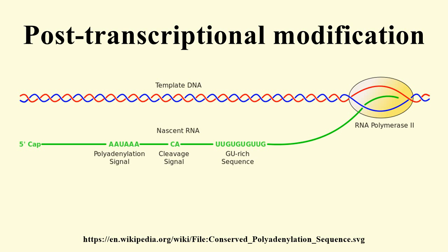Histone mRNA Processing: Histones H2A, H2B, H3, and H4 form the core of a nucleosome and thus are called core histones. Processing of core histones is done differently because typical histone mRNA lacks several features of other eukaryotic mRNAs, such as a poly-A tail and introns. Thus such mRNAs do not undergo splicing, and the 3' processing is done independently of most cleavage and polyadenylation factors.